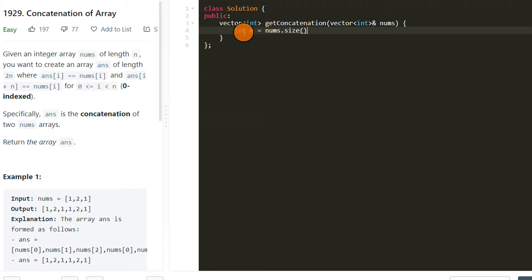We will store the size, and then the size of the result is two times n. Let's initialize to zero. Now we will run a loop so we are populating all the values of result.